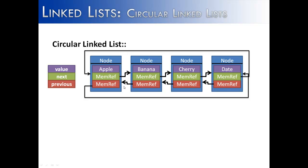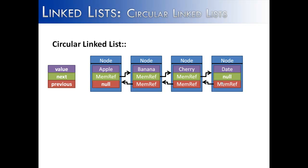So if you were to traverse the linked list from the beginning, it would go to the end and then loop back to the beginning. If you were to start at the end and go forward, you would go forward until you reach the first node, and then that first node would loop back to the last node in the list.